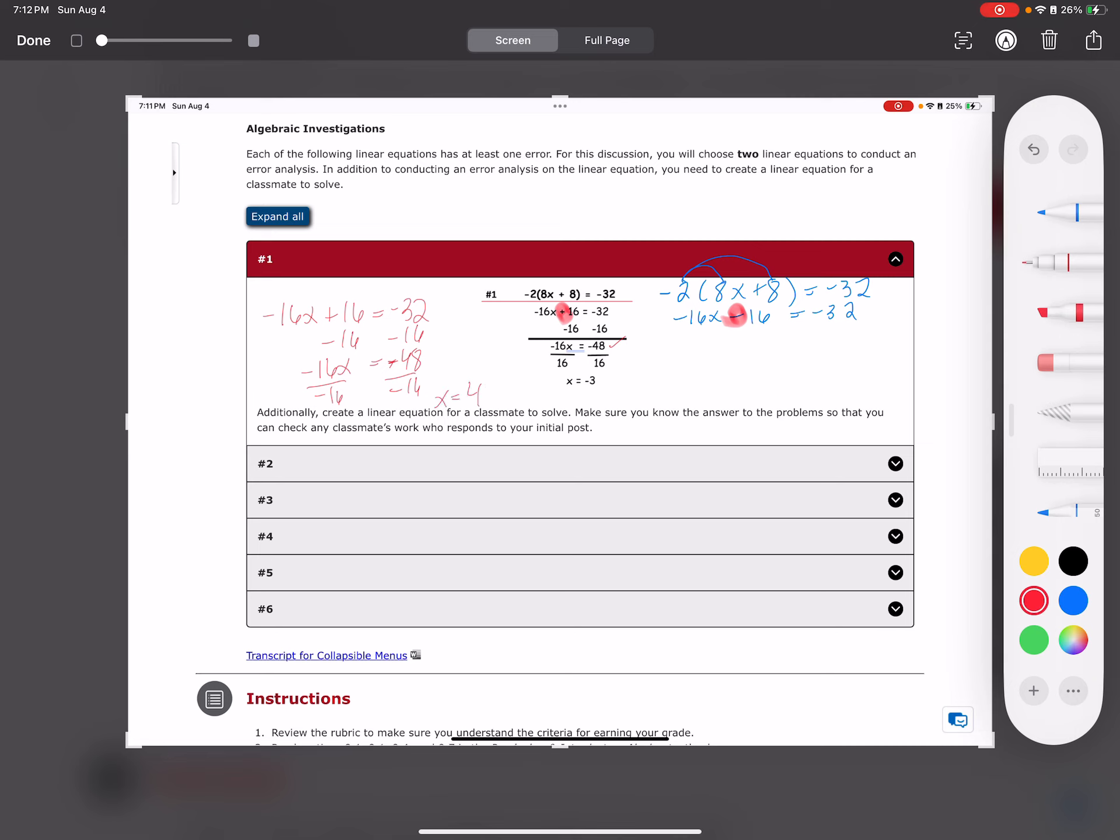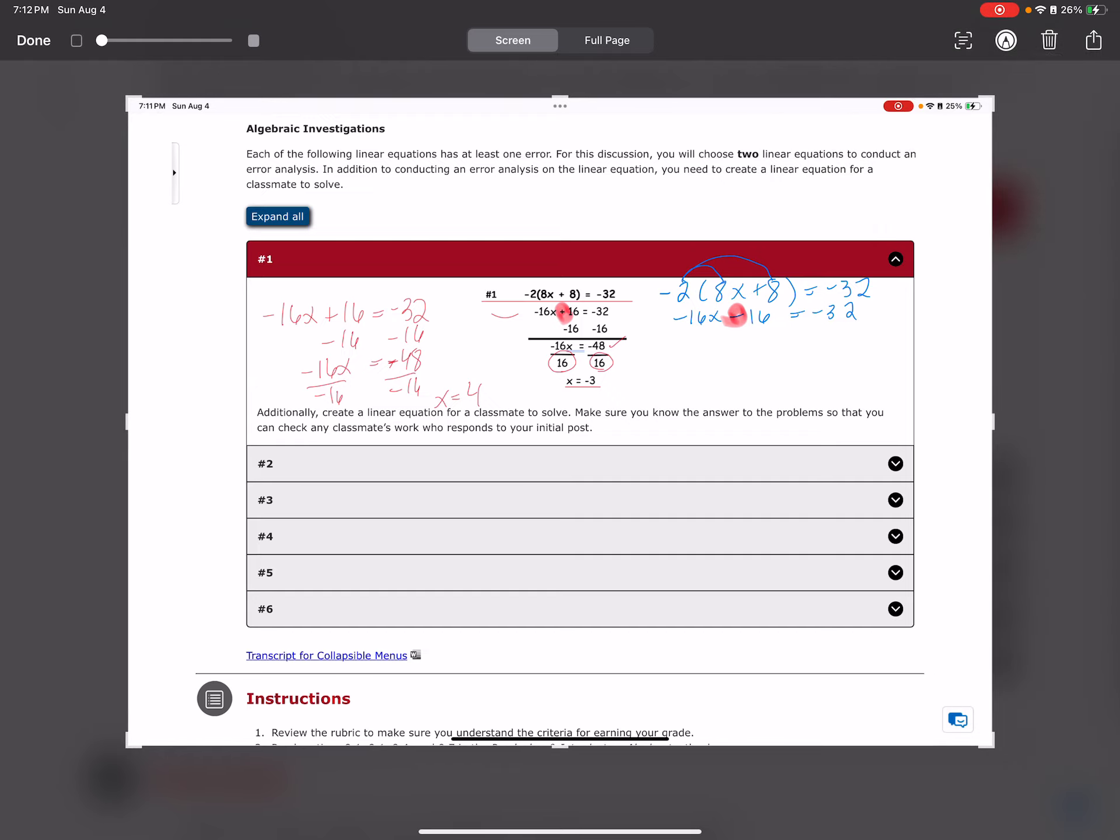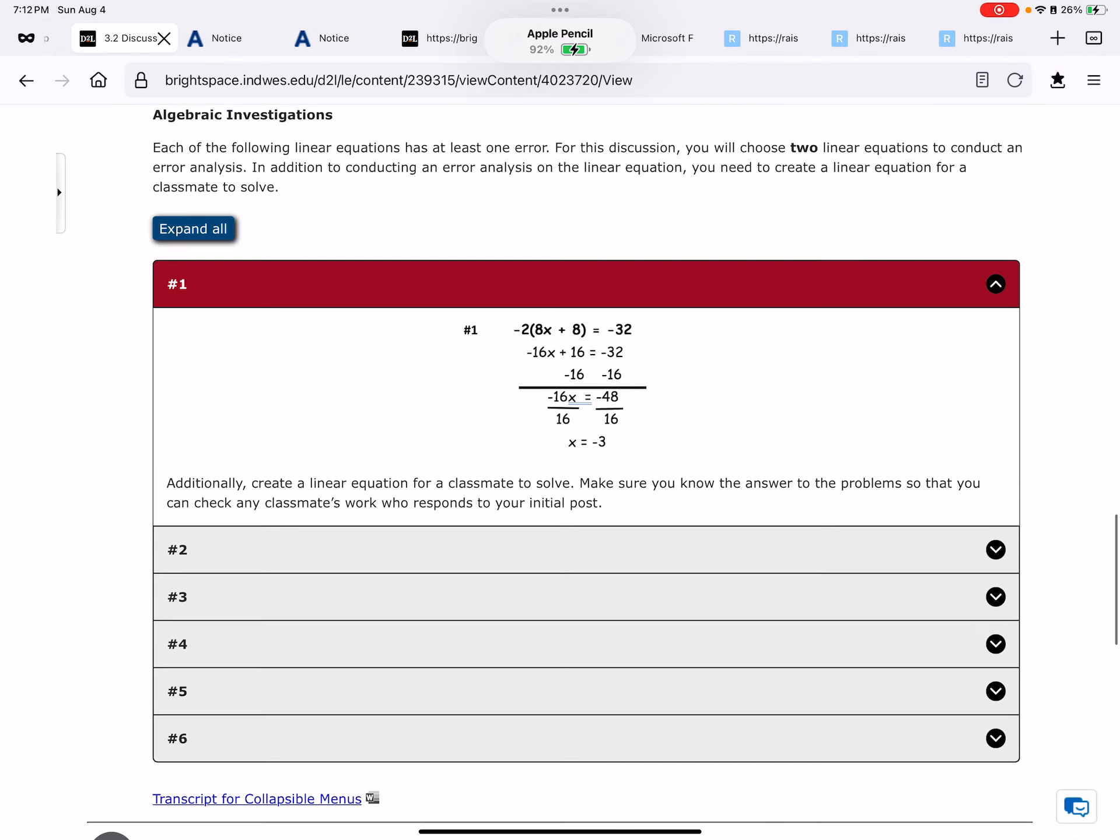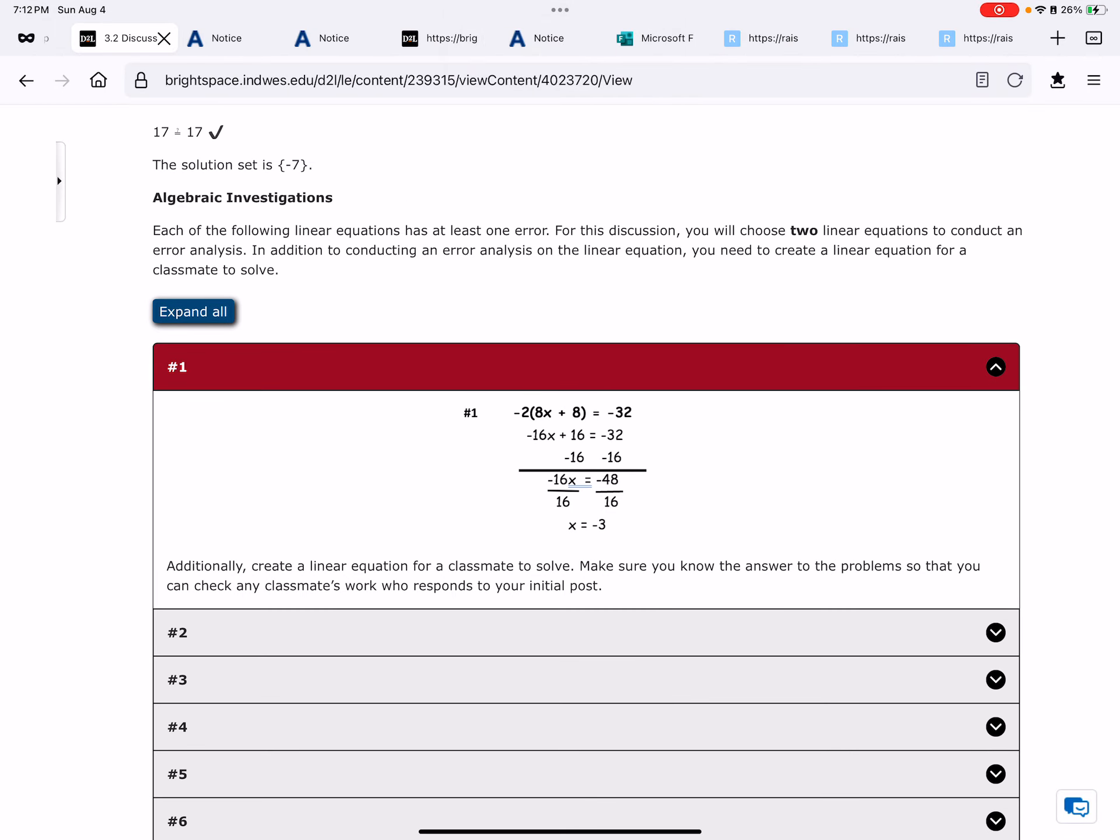Great. Divide by negative 16, and I get x equals 4. I look here: divide by 16, and they have x equals negative 3. That's their second error. That's how I did it - I found their error, then started again from the next spot even with their error, and found their next error from that spot.